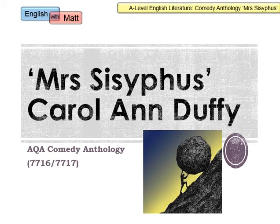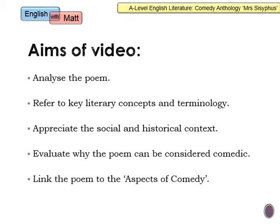The aims of this session are quite simple. It's to analyse the poem for AO2, which is authorial methods. I'm going to start by referring to key literary concepts and terms for AO1, then move on to AO3, which is the social and historical context. Finally, we'll link the text to the comedic genre, because at A-Level we look at these texts through the lens of comedy — so we need to know not just the text, but the comedy tradition in which it sits.